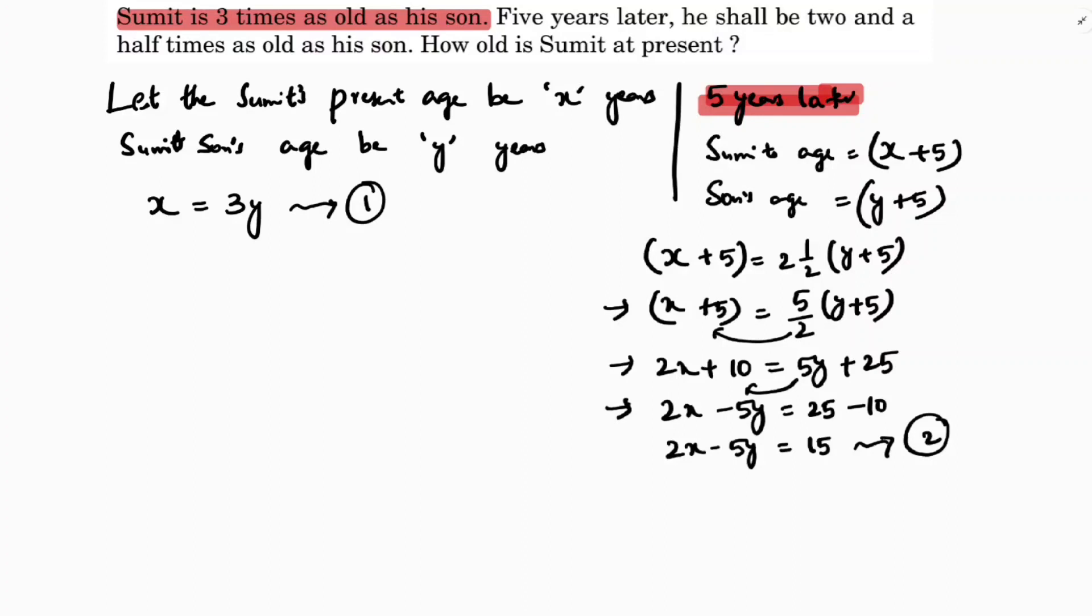Now substitute the X value here. Substitute X equals three Y, solving substitution method in equation two. So equation two is two times X, X is three Y, minus five Y equals 15. Six Y minus five Y is 15. So Y equals 15.